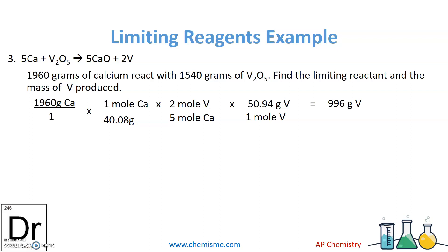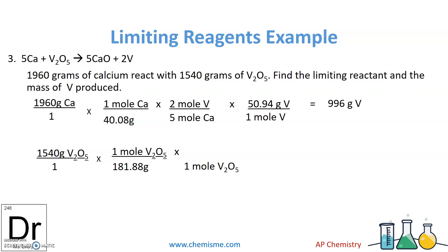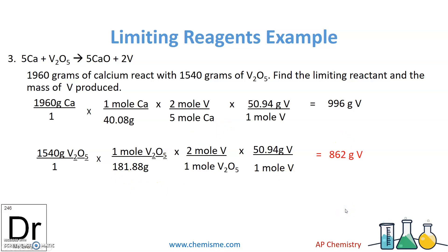Calculating: 1960 divided by 40.08, times 2, divided by 5, times 50.94 gives 996 grams of V from calcium. Now for V2O5: starting with 1540 grams, its molar mass is V2 plus O5 = 181.88 g/mol per mole of V2O5. In the equation, one mole of V2O5 gives two vanadiums — also shown in the formula itself. For every V, the molar mass is 50.94. Dividing 1540 by 181.88, times 2, times 50.94 gives 862 grams. Since 862 is the lower value, V2O5 is the limiting reactant.